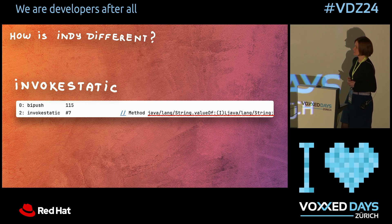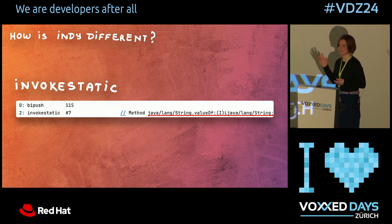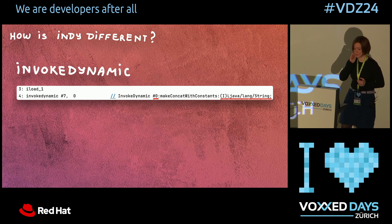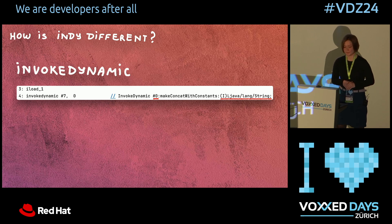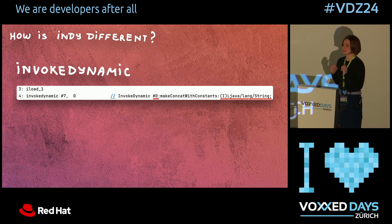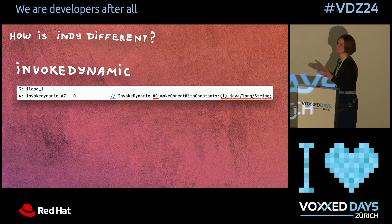There is also InvokeStatic for calling static methods — very similar, but you don't need to put any reference to the object on the stack, though you still need to put all arguments and carefully specify all the types. There is also InvokeSpecial and InvokeInterface. None of them was really as helpful as InvokeDynamic. With InvokeDynamic, you still put your arguments on the operand stack, but you don't need to specify much — only the types the method accepts and what it returns. You don't even need to put the exact method name of the target method.